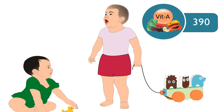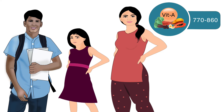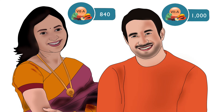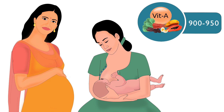Children aged 1 to 3 years should get 390 micrograms per day. Children aged 4 to 9 years should get 510 to 630 micrograms per day. For adolescents, 770 to 860 micrograms per day is recommended. For adult women and men, 840 and 1000 micrograms per day is recommended respectively, and the same is recommended for elderly men and women above 50 years of age. Pregnant and lactating women should take 900 to 950 micrograms per day.